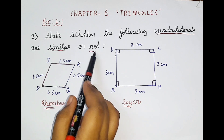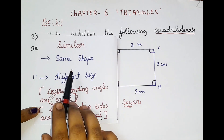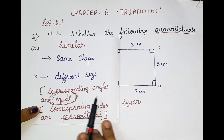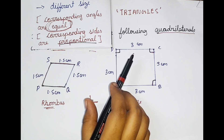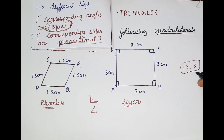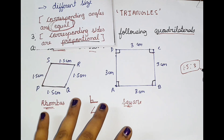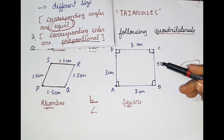So what about the question? We are supposed to say whether it is similar or not. Similar means we are supposed to see whether they are having the same shape, different size, and the corresponding angles are equal and corresponding sides are proportional. Here they have mentioned some values — here it is 1.5 centimeters and here it is 3 centimeters. When we compare all the sides, we get a ratio of 1.5 is to 3. So we can say that it is proportional. But there is one more condition — we need to check the corresponding angles.